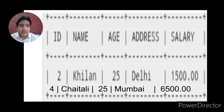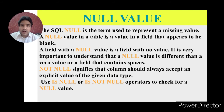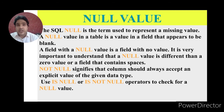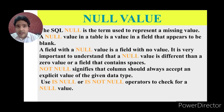Now we will discuss NULL values. If any attribute has no value and represents a blank, it is considered NULL. One important thing: NULL and 0 are not the same — 0 is a value representing zero, but NULL means nothing. We can define NULL as a constraint when creating a table using IS NULL or NOT NULL. If an attribute is defined as IS NULL, a null value is allowed; if NOT NULL, the attribute must have an explicit value.